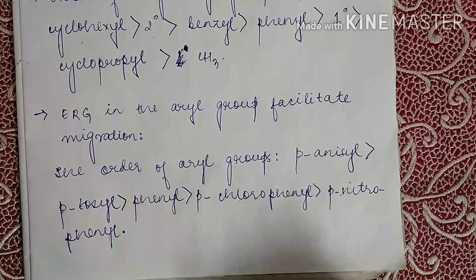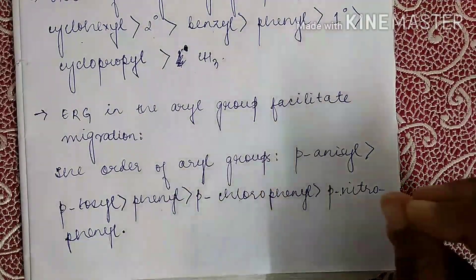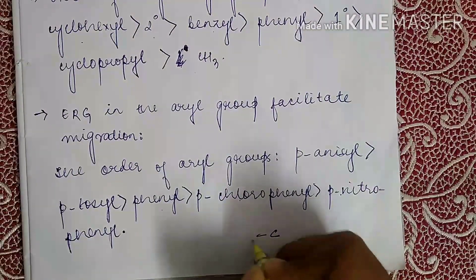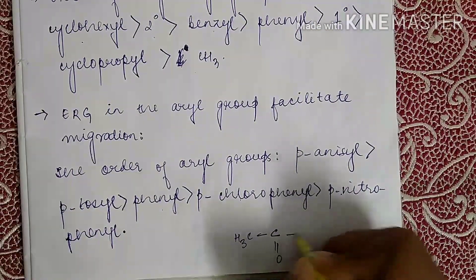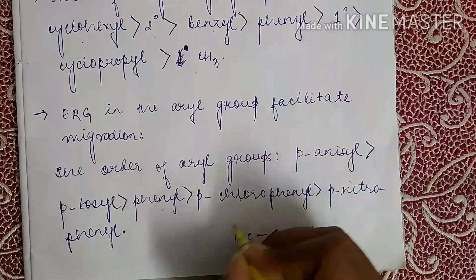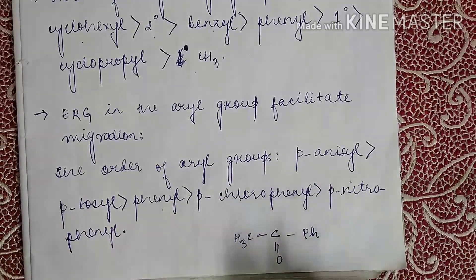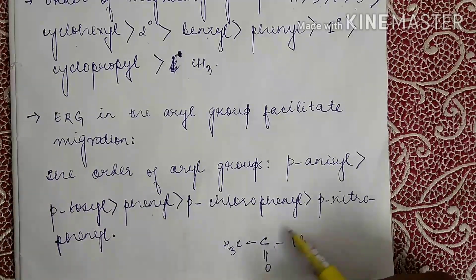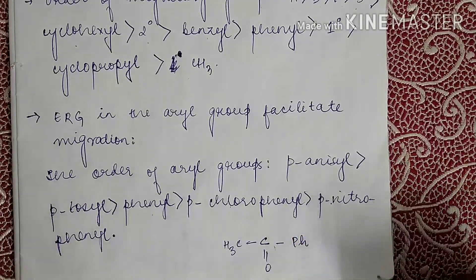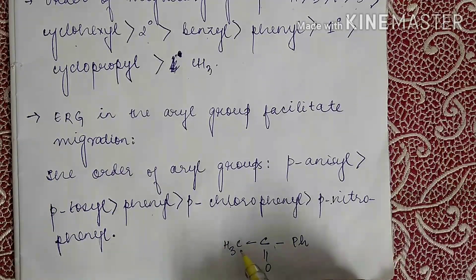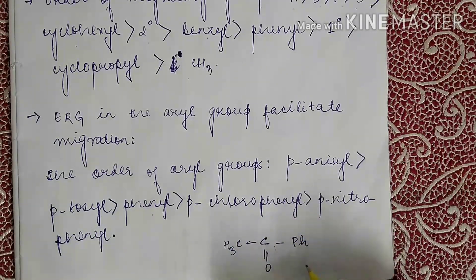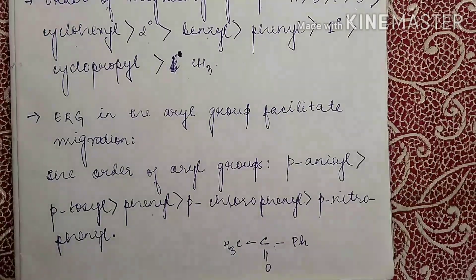In the case of alkyl aryl ketones — for example, CH₃-CO-Ph — the aryl group will migrate. However, there is an exception: if the alkyl part contains a tertiary butyl group, then the tertiary butyl group will migrate instead of the aryl group. Please like, subscribe, and share my channel, and if you have any doubt, please ask in the comment section below. Thank you.